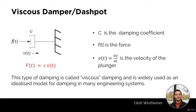The damping coefficient, like the spring constant for the spring, is a given value for a damper and depends on the way that damper was built. The type of damping expressed by F(t) = C·V(t) is called viscous damping and it's widely used as an idealized model for damping in many engineering systems. This means that almost any kind of damping can be modeled using this equation of the viscous damper. It's very general and applies to many different models of damping.